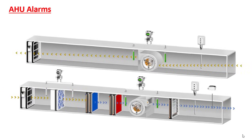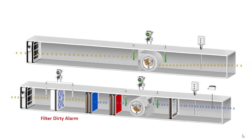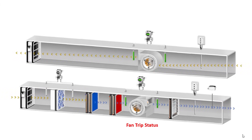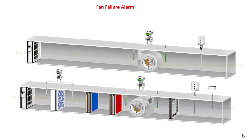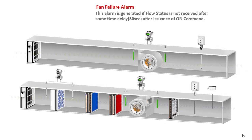Now let's discuss common alarms inside AHUs. The first is a filter dirty alarm — when the filter gets dirty, pressure builds up across it, and the DPS installed across the filter sends an alarm signal to the DDC. Then there is a fan trip alarm, received from the MCC; an overload relay issues the alarm if there is a short circuit or overload current in the motor. A very important alarm is the fan failure alarm, generated if a flow status from the DPS is not received within a set time delay — typically 30 seconds after the on command is issued.